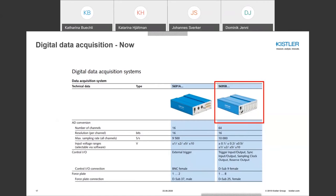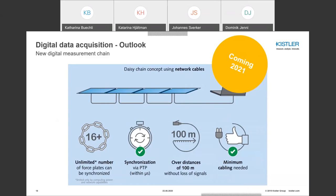Looking ahead to 2021, there will be a new digital measurement chain based on new digital force plates. The main advantage is that there will be no extra DAQ box — all force plates can be daisy chained. Up to 16 force plates can be daisy chained, and more can be synchronized via PTP switches, theoretically allowing an unlimited number of synchronized force plates. Synchronization uses the Precision Time Protocol (PTP), an industrial standard, with synchronization within microseconds. Cables are no longer limited to a certain distance — up to 100 meters without signal loss.